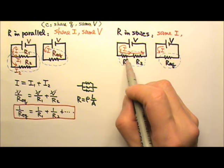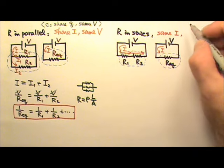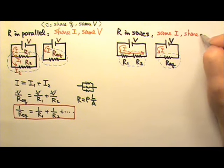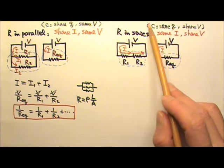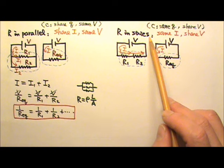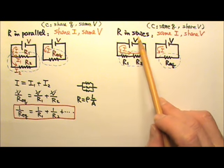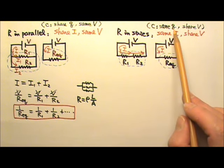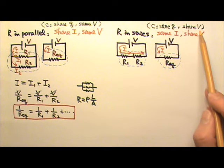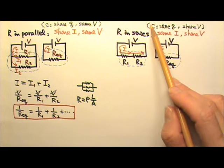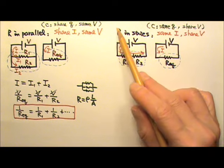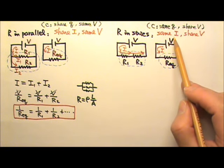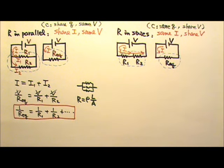However, they would share the total voltage V. This again is very similar to the case for capacitors in series. When we have capacitors in series, they would have the same charge, but they have to share the voltage. Again, for capacitors, we talk about the charges on the plate, and for resistors, we talk about electric current, which is charge flow. So they are very similar.